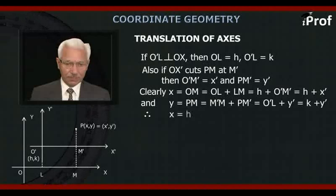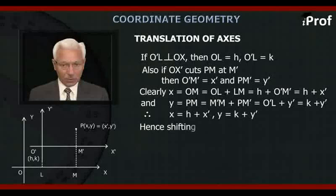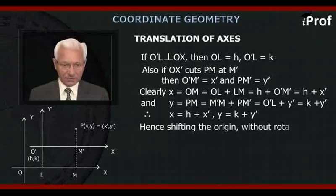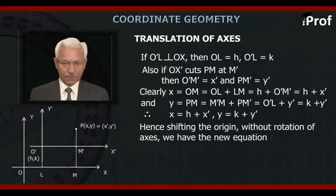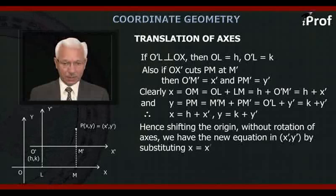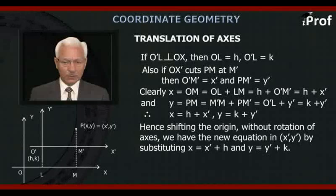Therefore, X equal to h plus X', Y equal to k plus Y'. Hence, shifting the origin without rotation of axes, we have the new equation in X', Y' by substituting X equal to X' plus h and Y equal to Y' plus k.